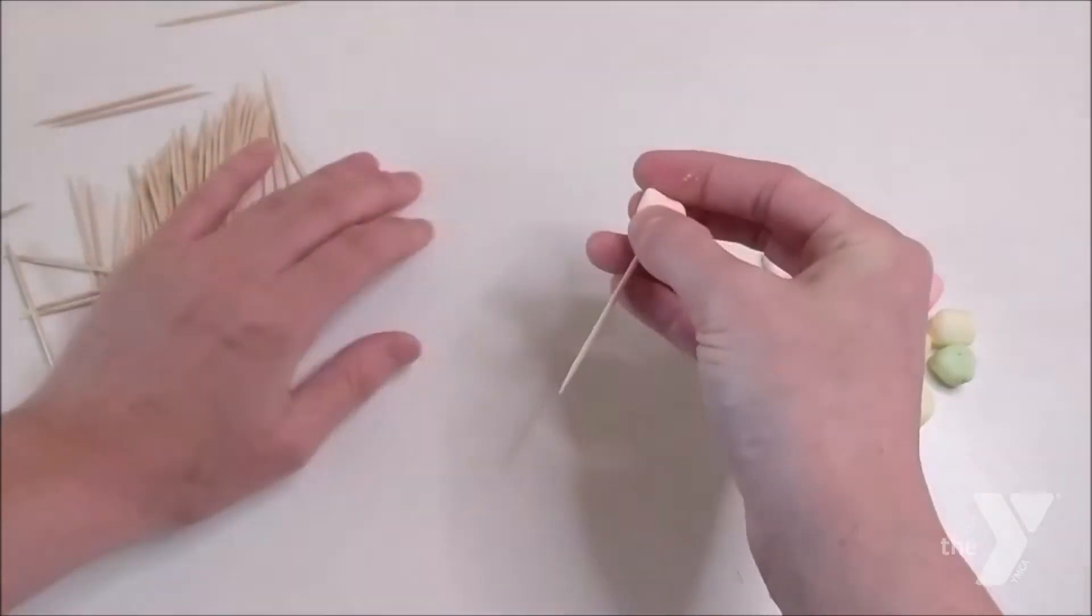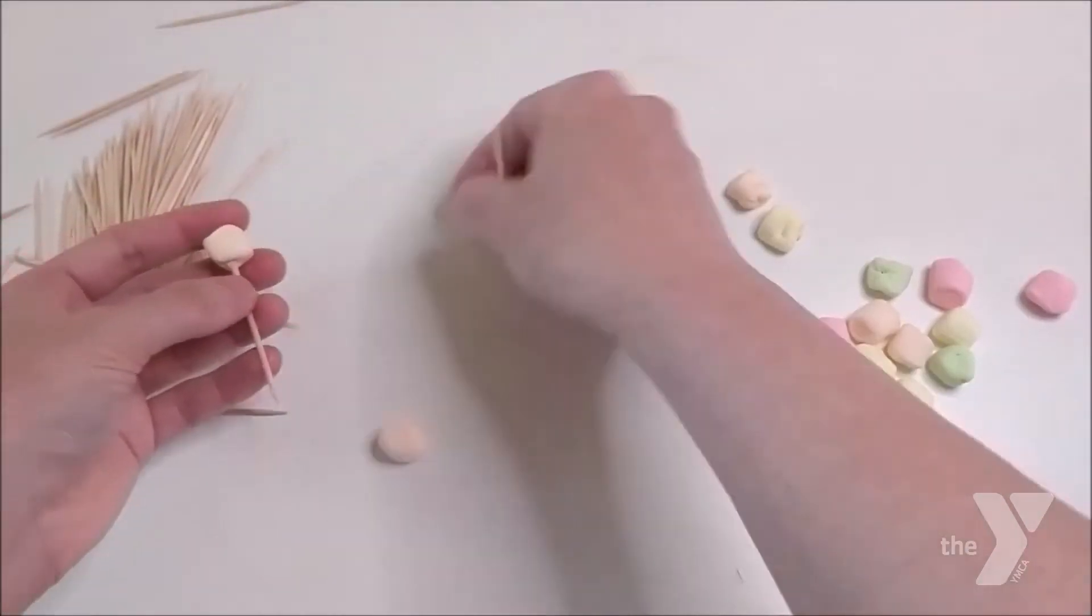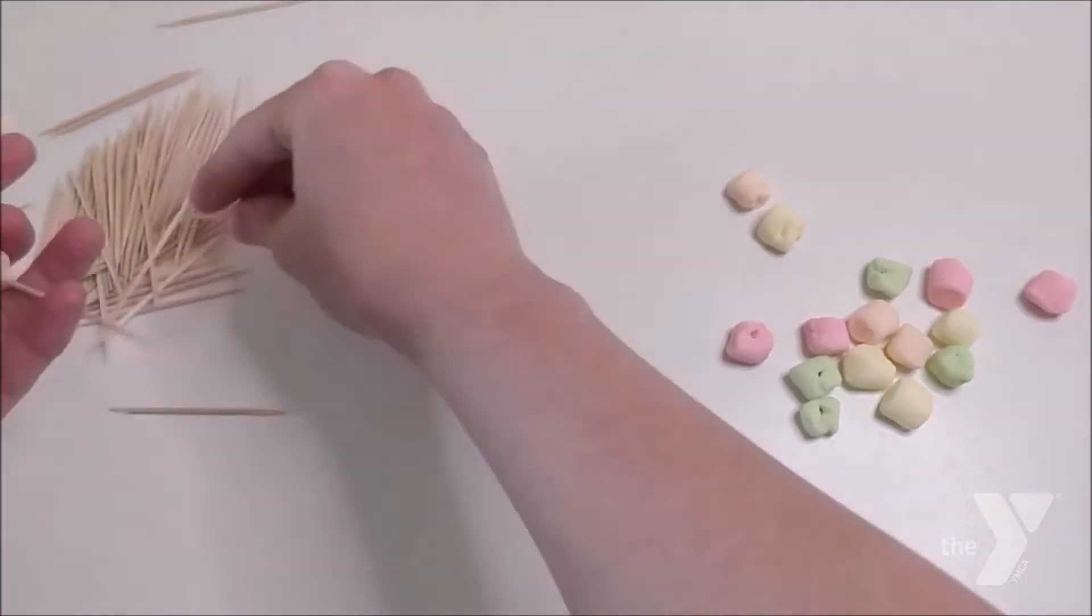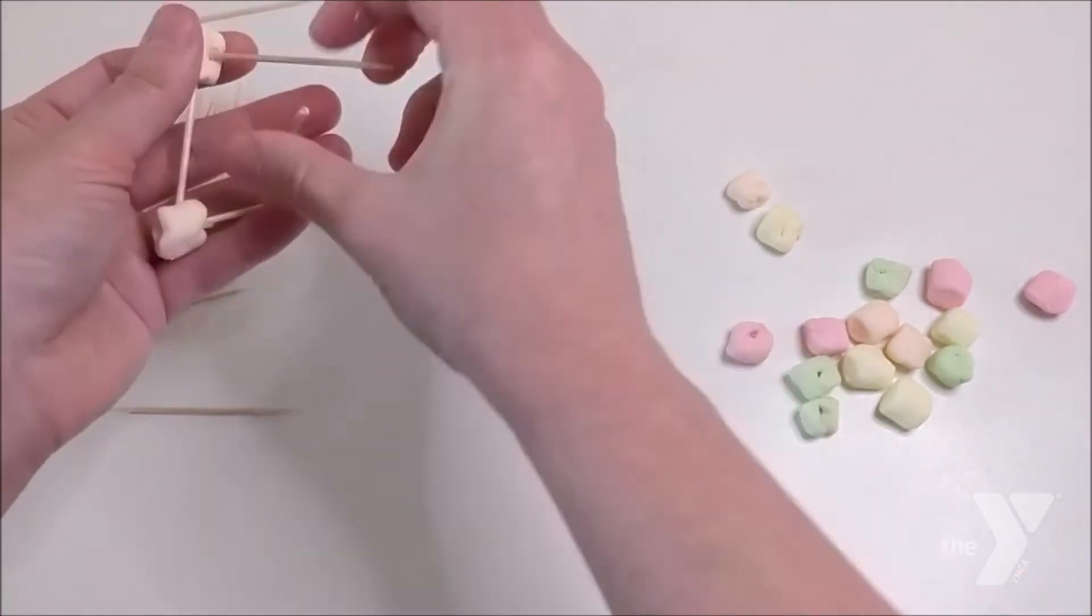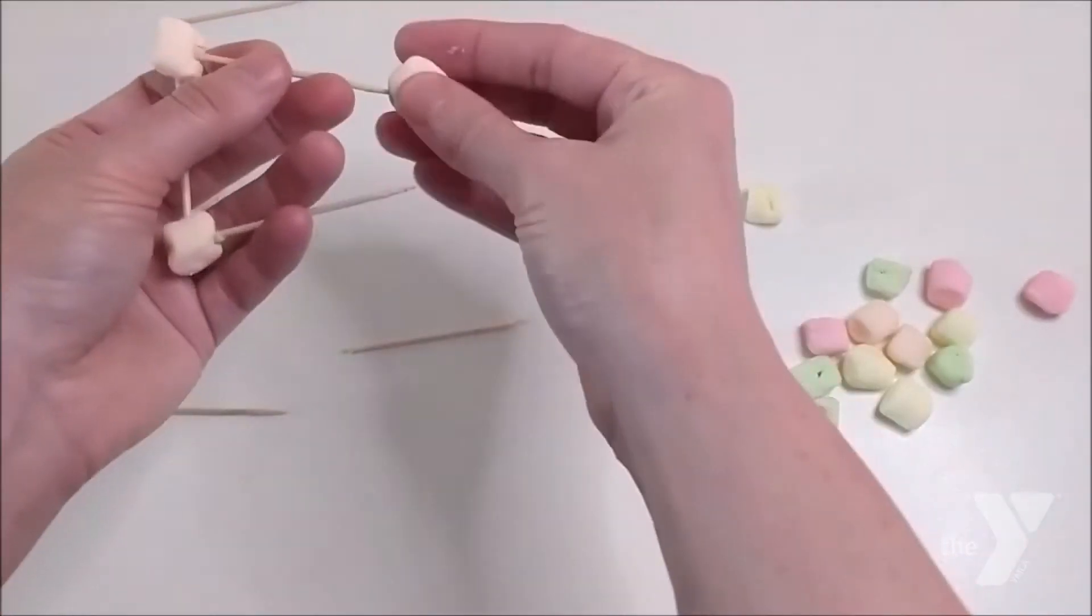We'll build a prototype with marshmallows and toothpicks together. In the second part, then you'll get your superglue and popsicle sticks and build the real version. So first, let's make a bridge using squares.